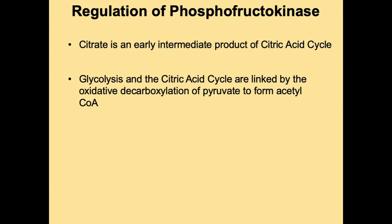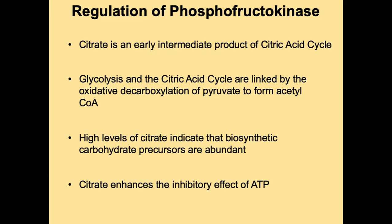Phosphofructokinase is also regulated by citrate, a product of the citric acid cycle. Glycolysis and the citric acid cycle are linked by the decarboxylation of pyruvate to form acetyl-CoA. High levels of citrate indicate there are plenty of carbohydrate precursors in the cell, signaling that glycolysis needs to be switched off. Citrate binds to phosphofructokinase, adding to the inhibitory effect of abundant ATP.